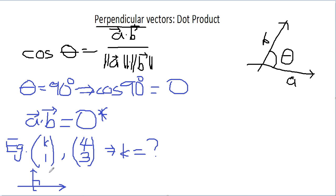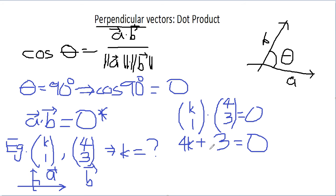Hence we use this dot product. We can treat this as vector A and this is vector B. Hence K, 1 dot product of 4, 3 will give me 0. So 4K plus 3 will give me 0. Tidying up the equation, you get K equals to negative 3 over 4.